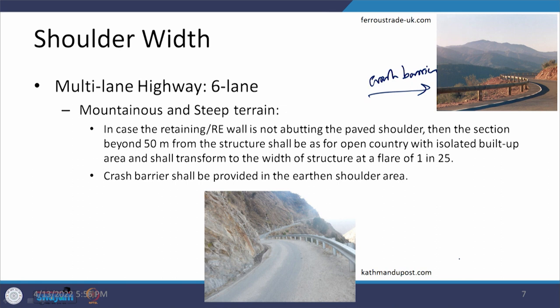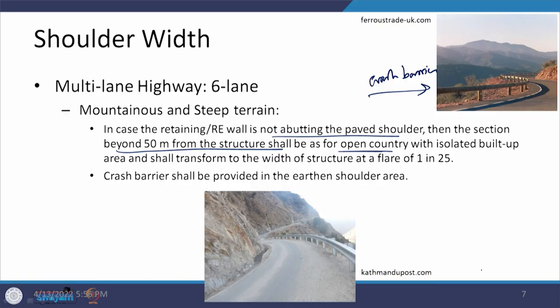In case the retaining wall or RE wall is not abutting the paved shoulder, then the section beyond 50 meters from the structure shall be as per open country. Looking at the table, for built-up areas or approaches to grade separated structures the widths are different compared to open country. If the RE wall is not abutting, it means space is available, so the open country section can be carried forward. If there is still a need to transform widths, the flare rate is 1 in 25.